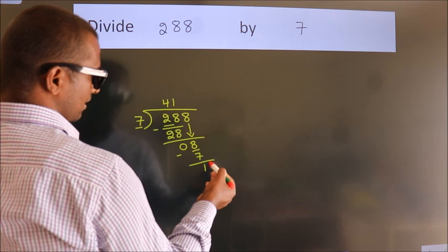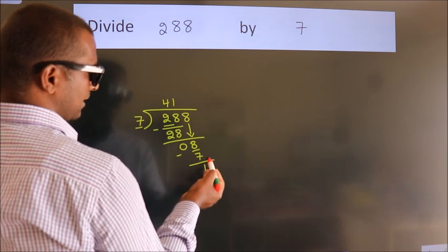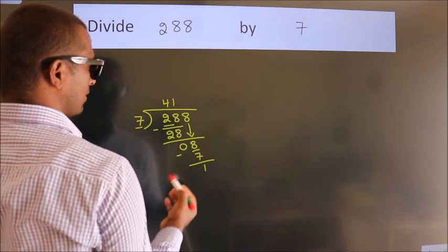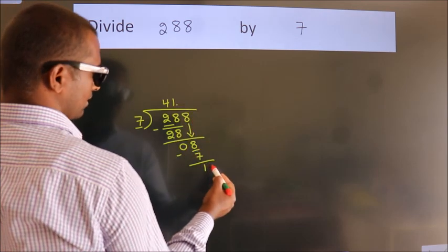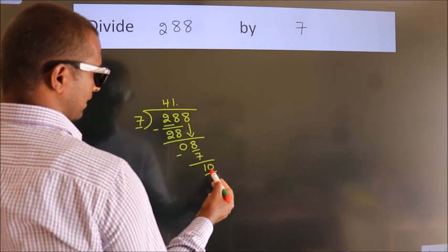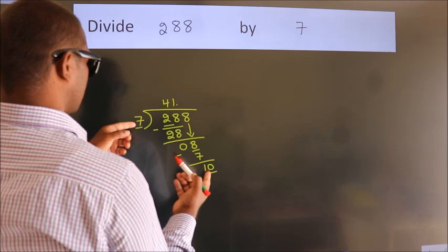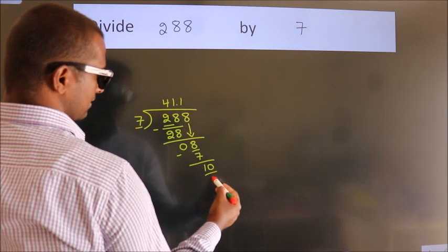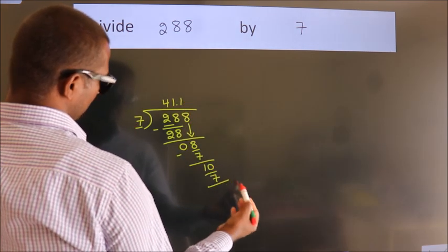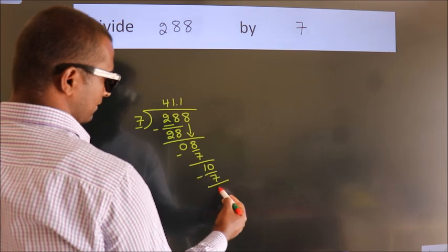After this, no more numbers to bring down. So what we do is, we put a dot and take 0. So 10. A number close to 10 in the 7 table is 7 once 7. Now we subtract. We get 3.